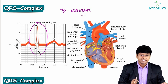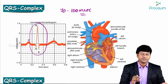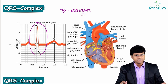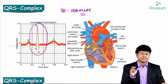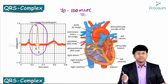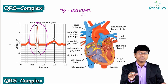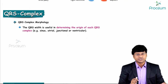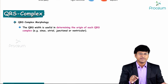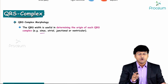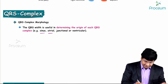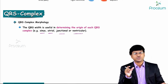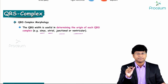The QRS complex contains one negative component — the Q wave — one positive component — the R wave — and another negative component — the S wave. The width of the QRS complex is useful in determining the origin of each QRS complex: whether the impulse originates from the sinus node, the atria, the junction, or the ventricle.